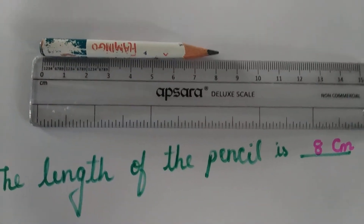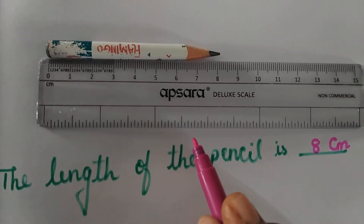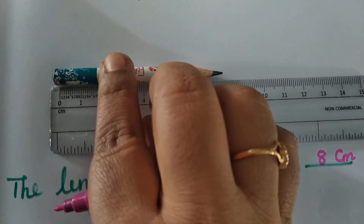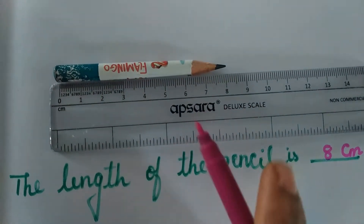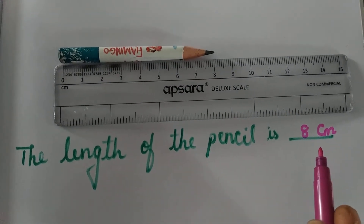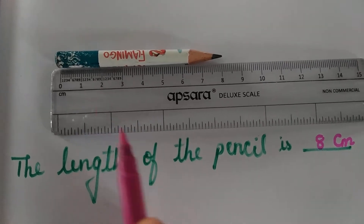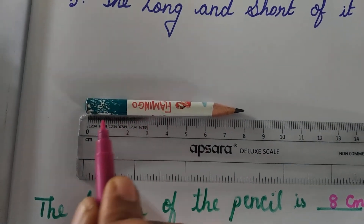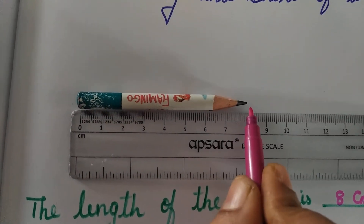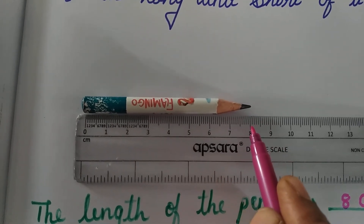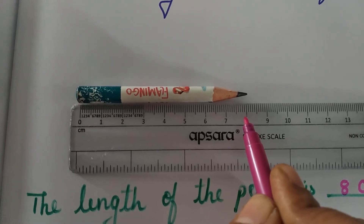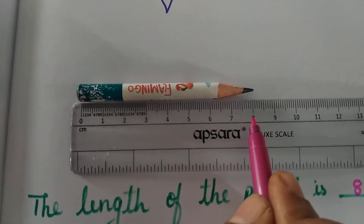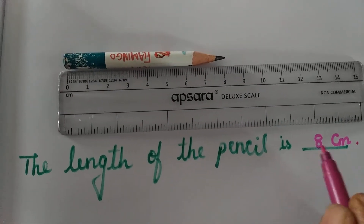Measure the objects: you can measure the eraser, pencil, notebook, crayon — all those objects. Keep the ruler and above it keep the objects. From 0 to which number that tip ends, measure and write it Kanna. Listen once again: take the ruler and keep the object above it. From 0 to which number the object ends, you want to measure. Here the tip of the pencil ends at number 8, so the length is 8 cm. You want to write like this.